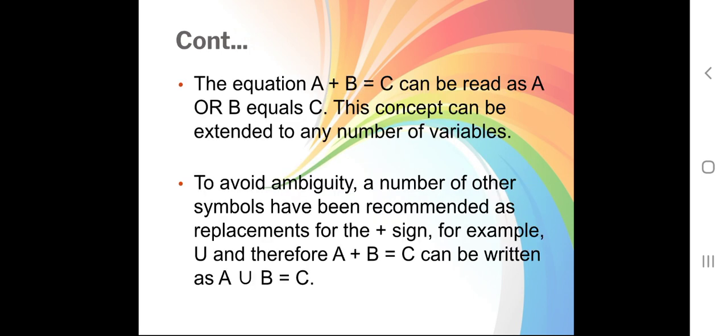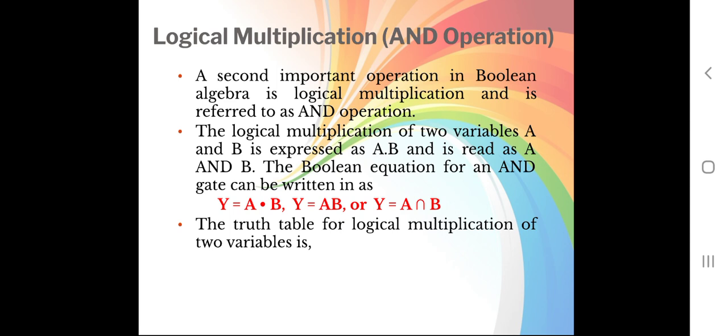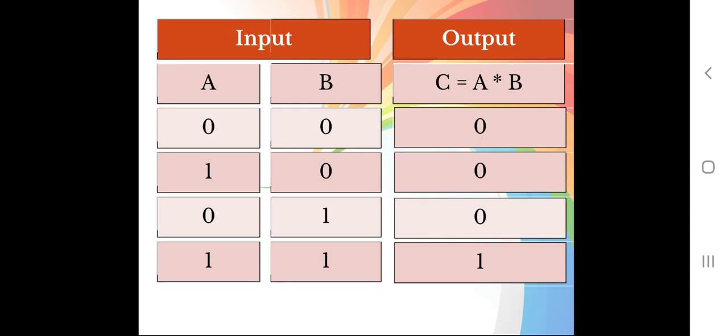The equation A plus B equals C can also be referred to as A union B. Now for the AND gate: Y is the output, equal to A times B. If A is 0 and B is 0, the final output is 0. If A is 1 and B is 0, the final output is 0. If A is 0 and B is 1, the final output is 0. If A is 1 and B is 1, the final output is 1. This is the truth table for the AND gate.